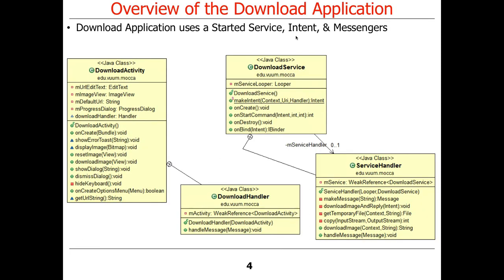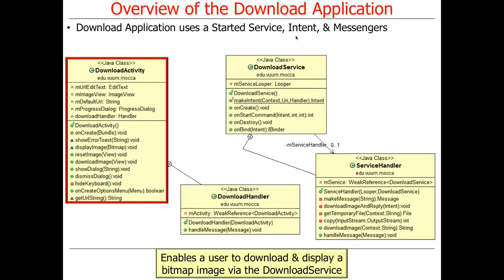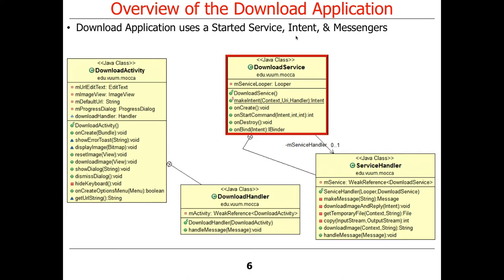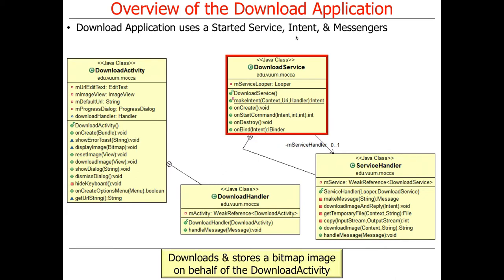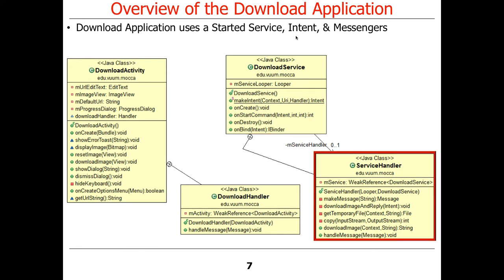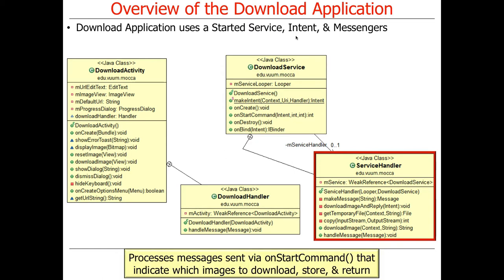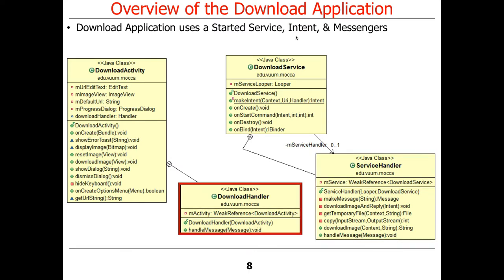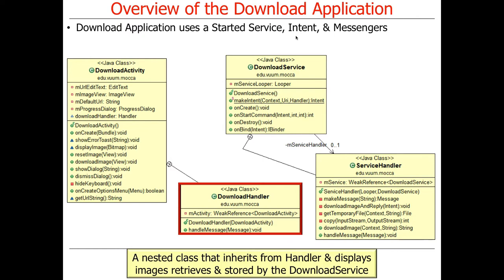Here's a quick overview of the download application. There's a download activity — that's where the user interacts with the user-facing portion of the code to describe what image they want to download. There's a download service that does the heavy lifting of the actual downloading. There's also a service handler, which runs in the context of the service and handles the concurrency. It concurrently downloads and stores the images, then returns the results back to the activity.